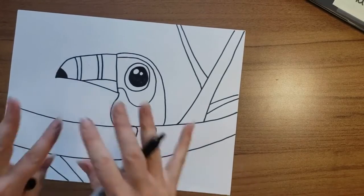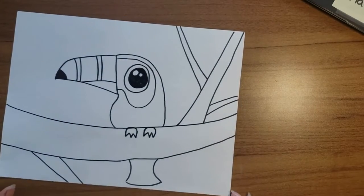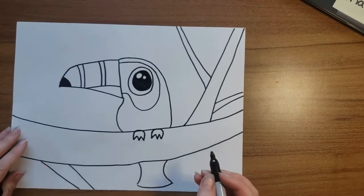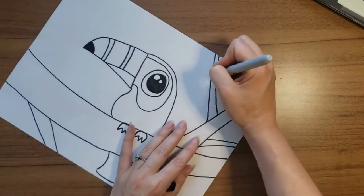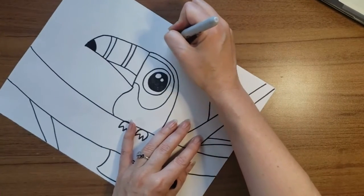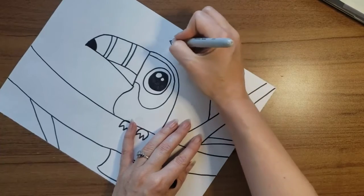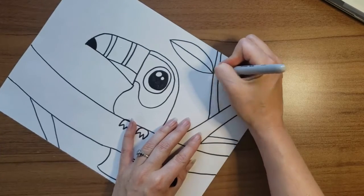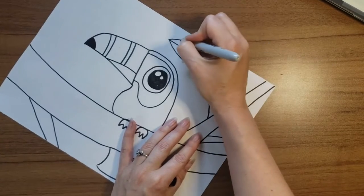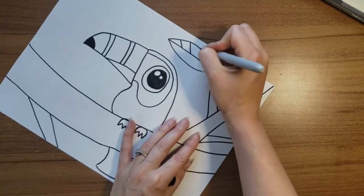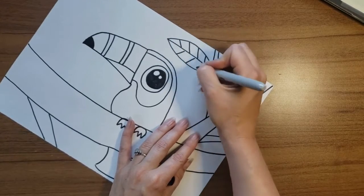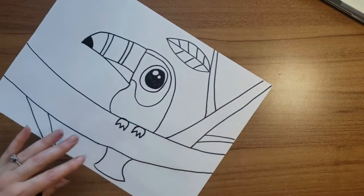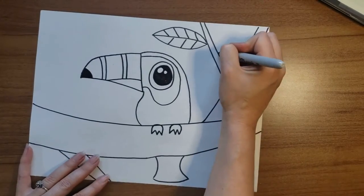Then I think on my branches I want to add some leaves. To draw a leaf I like to draw a football or a lemon shape, and then draw a line down the center of that and give it little veins how our leaf circulates all its nutrients. You can add those leaves wherever you want.